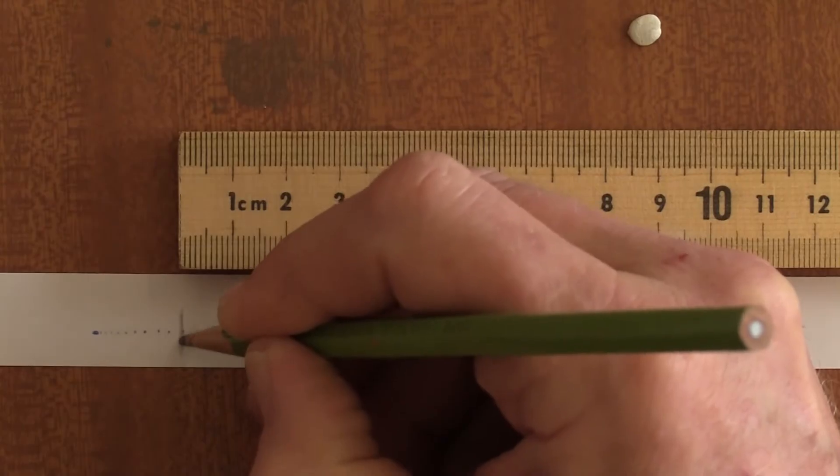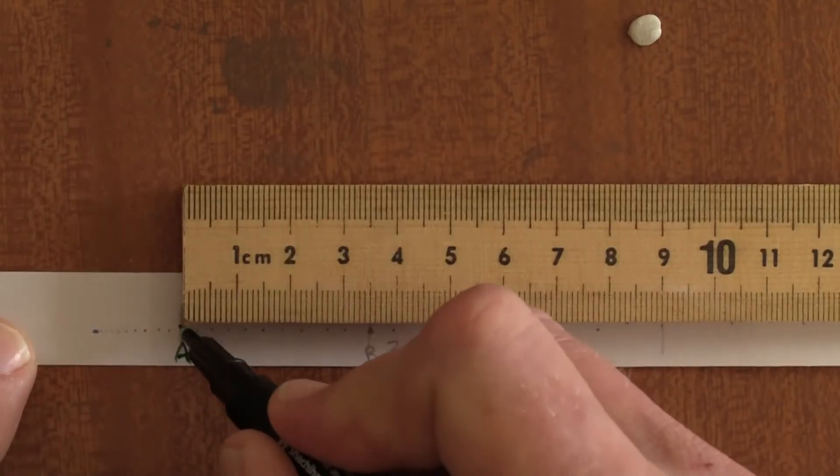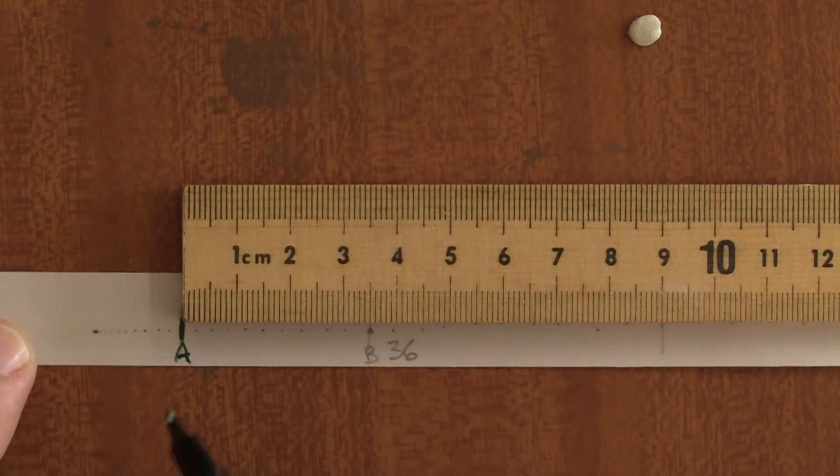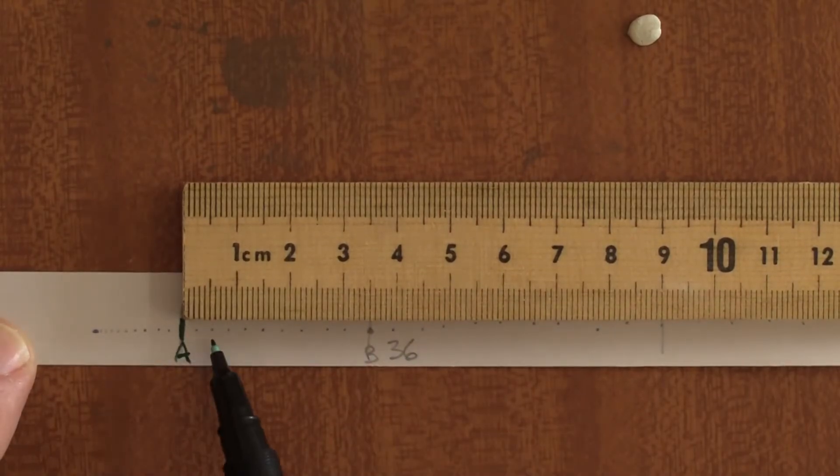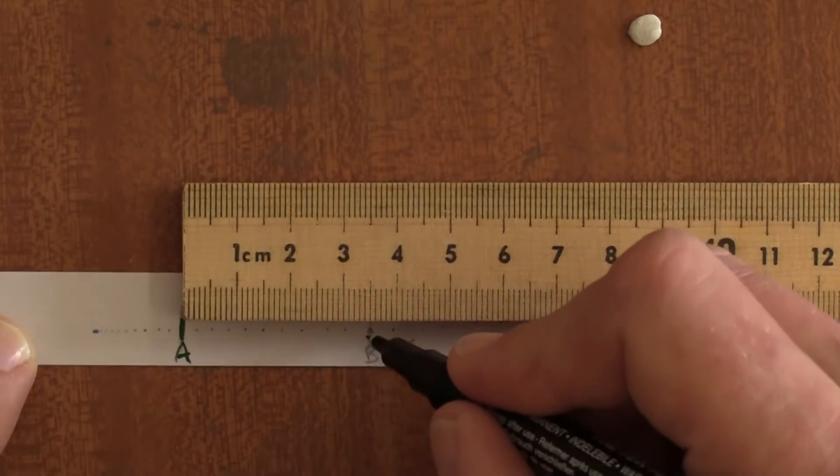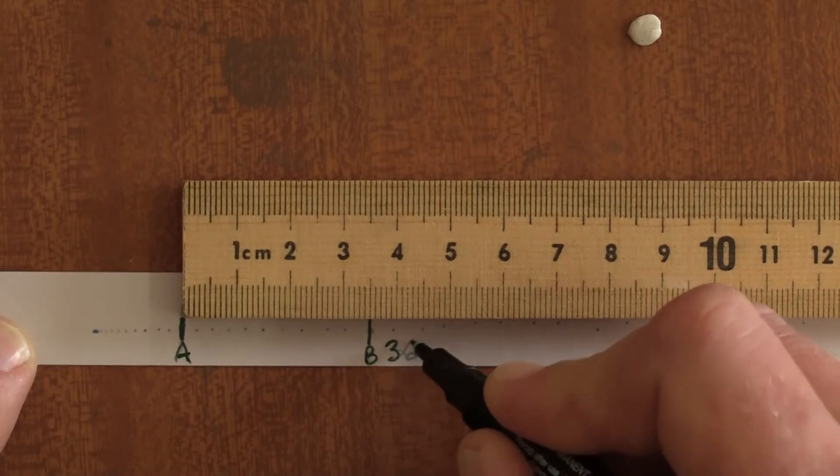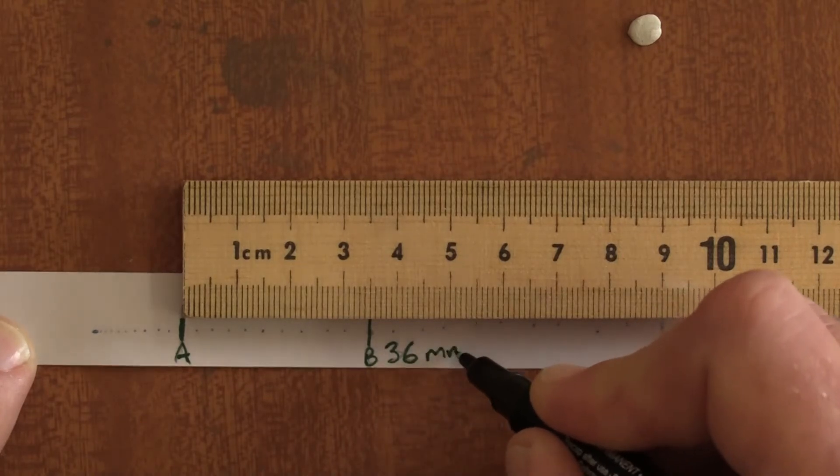Let's start measuring here. We mark that point and call it point A. We then count 10 successive intervals and mark that B. It is 36 millimeters from point A.